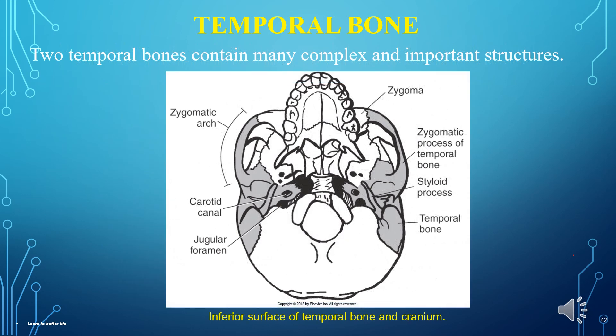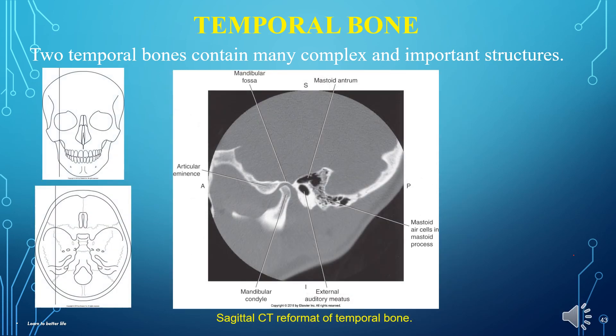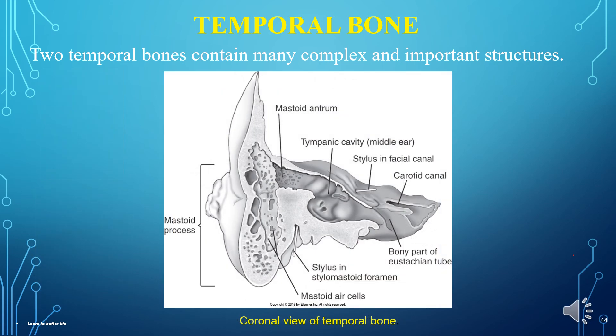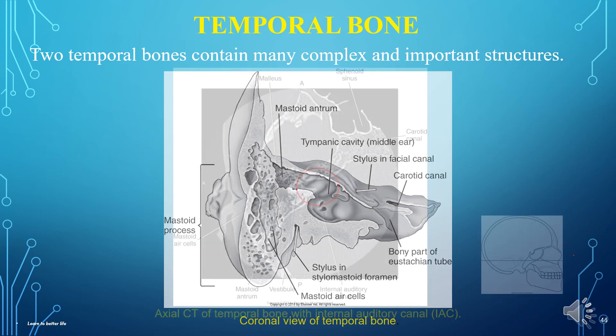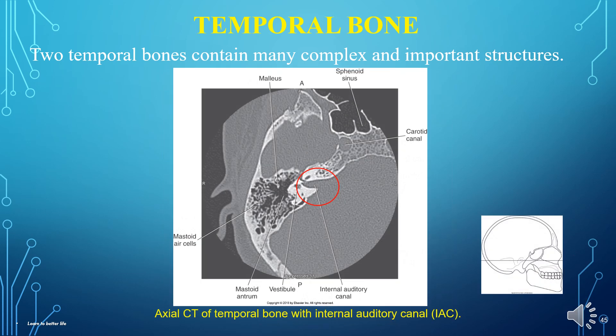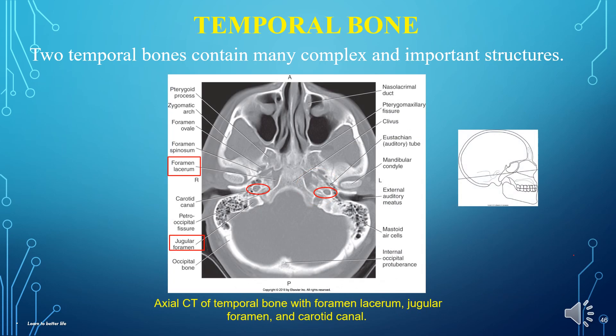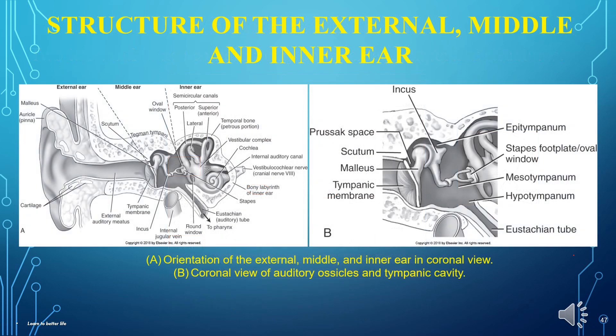Many cranial nerves and blood vessels pass through the temporal bone. Injuries to this bone can cause loss of function in the facial muscles, as well as hearing loss and heavy bleeding. This is the inferior surface of the temporal bone and cranium, the sagittal CT reformat of the temporal bone, and the coronal view of the temporal bone. Another view is the axial CT of the temporal bone with the internal auditory canal (IAC).